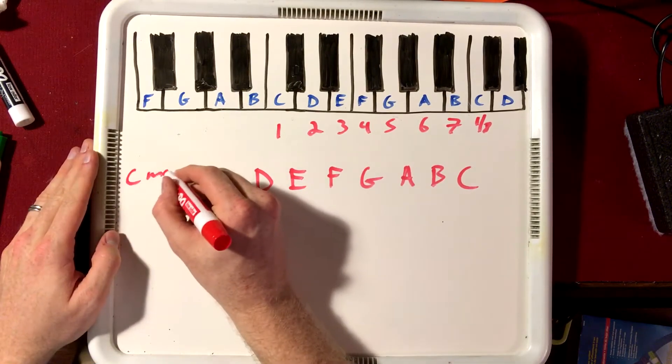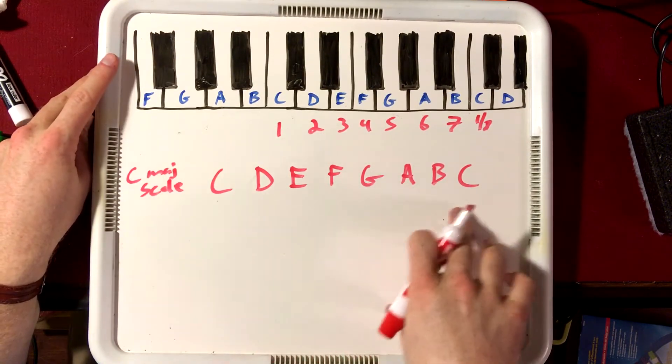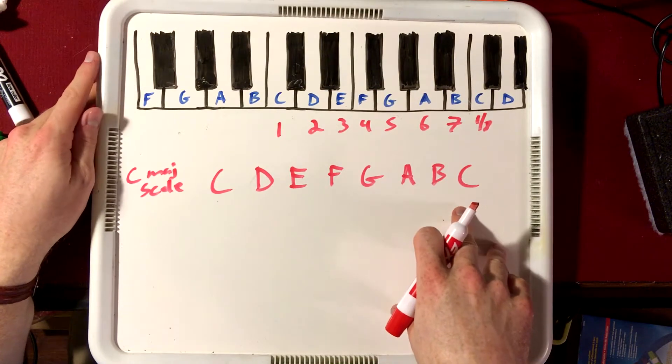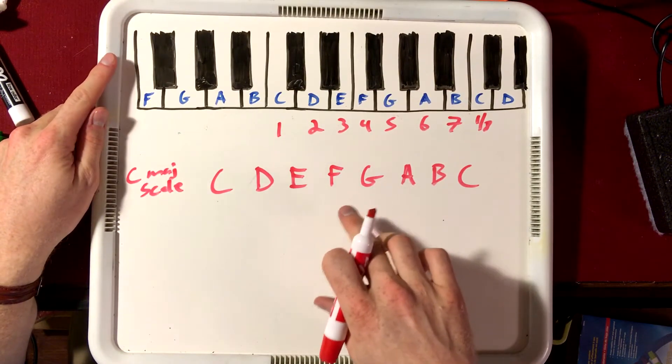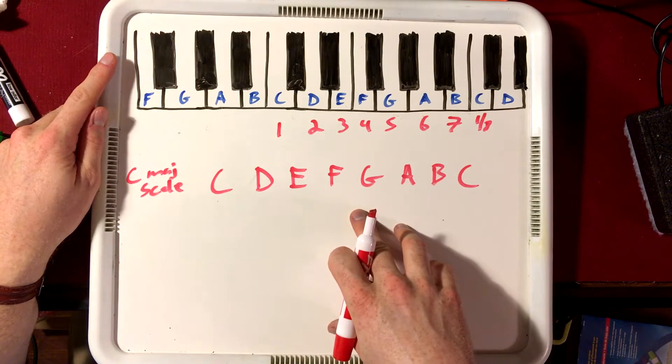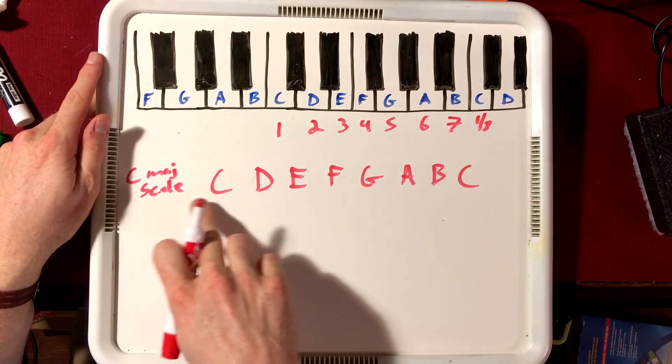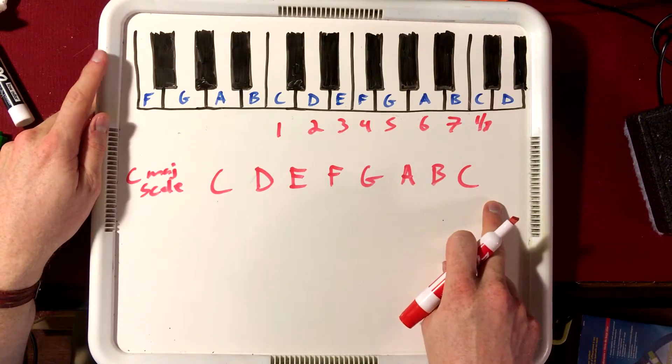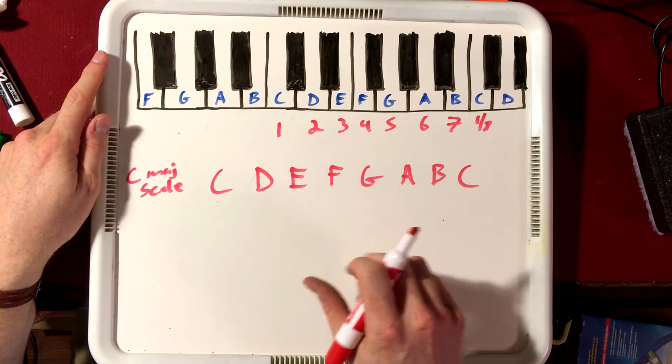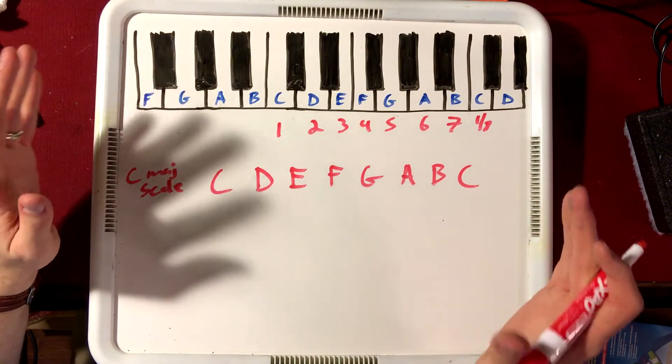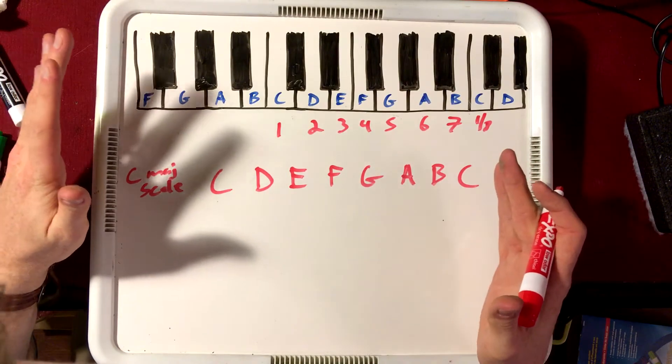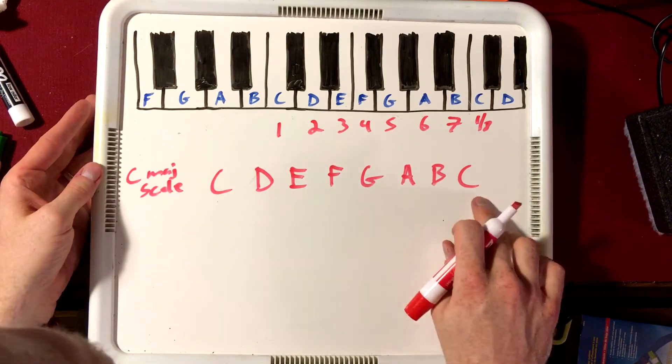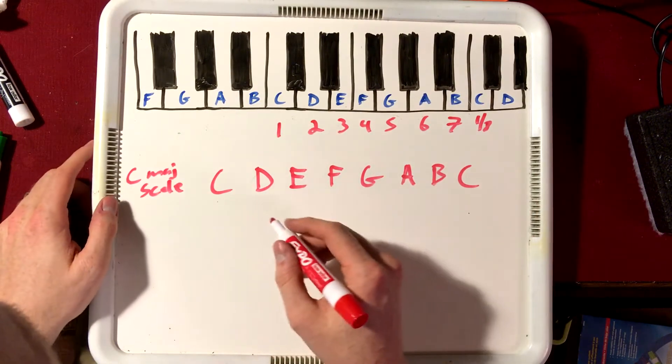So this is the C major scale. Every major scale has what's called a relative minor scale. It's going to be a natural minor scale that is the same notes as the major scale. All it is, is a different starting note. Here's our major C scale. The relative minor to this is the A natural minor scale. And the reason why it's called relative is because it's almost the same. Imagine a relative, you know, they're very similar to each other, but they're not exactly the same. This is the relative that's related natural minor scale.